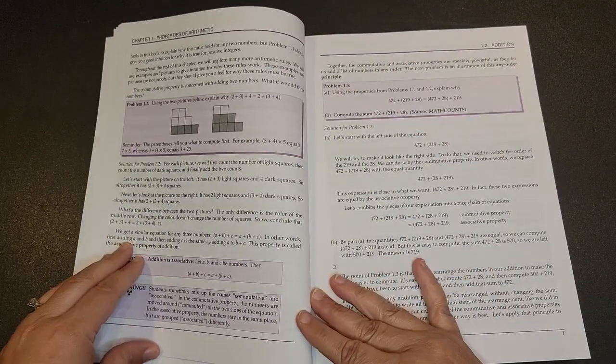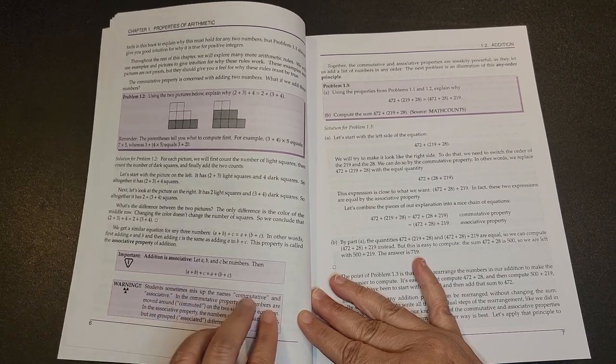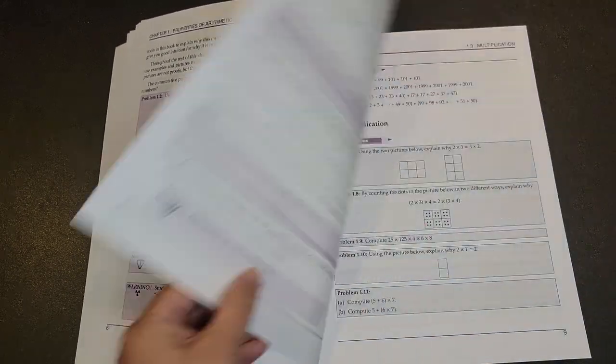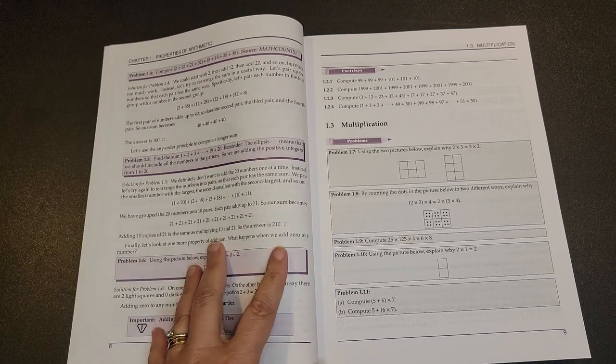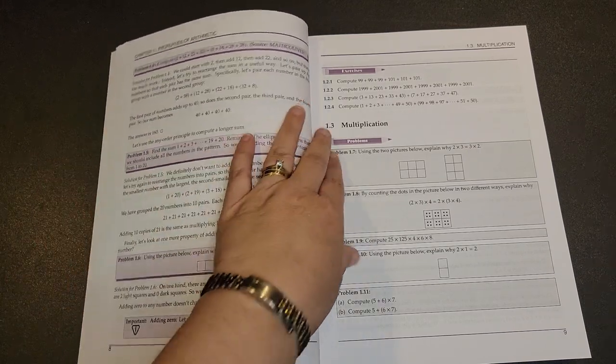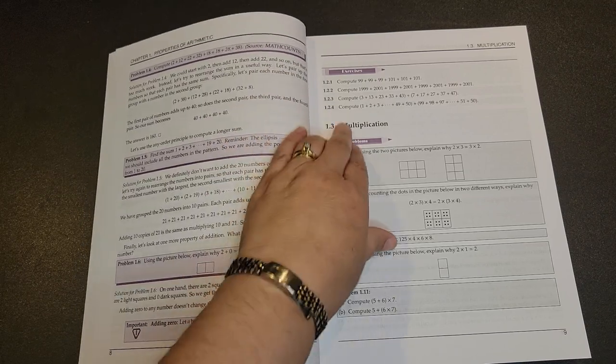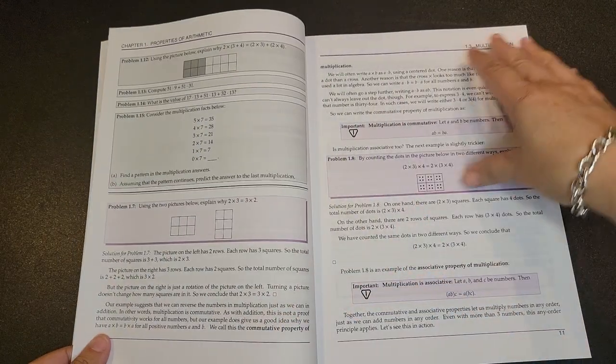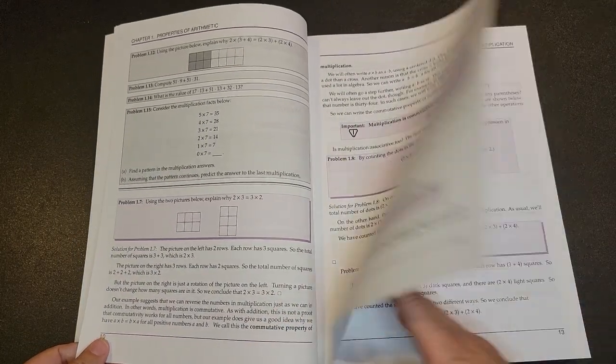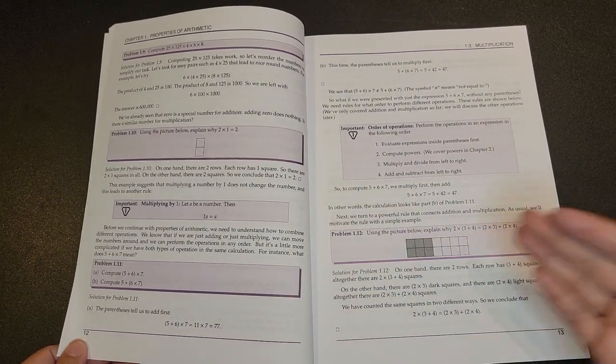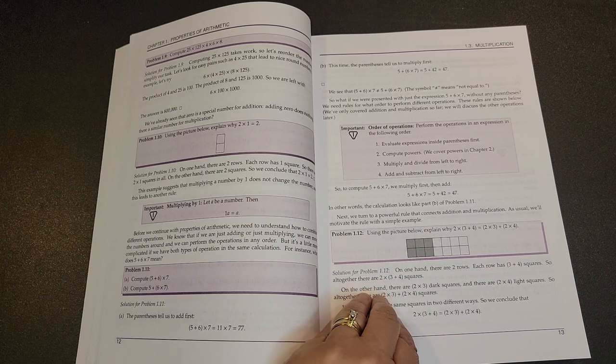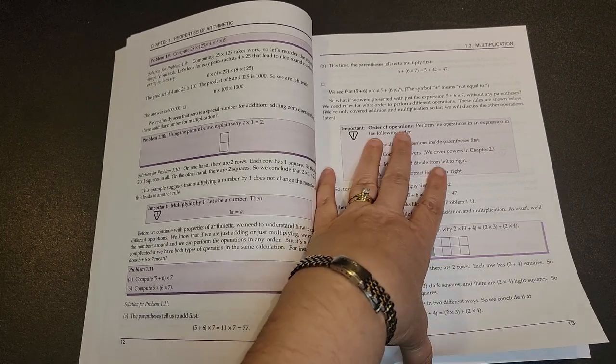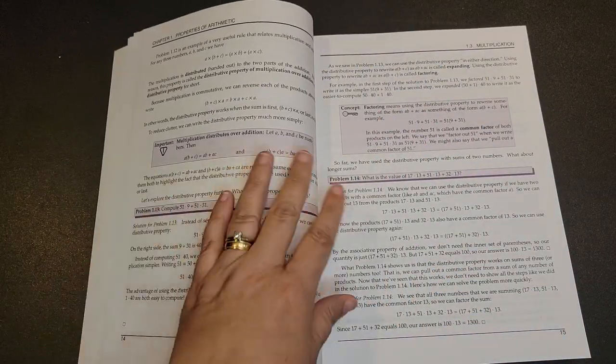They show warnings like 'students sometimes mix up the names commutative and associative,' so this describes the difference between the two. By the end of this section, you should be able to have no issue in working these types of problems. They do have four more exercises here for you. When you get into multiplication, again you have your problems first and then they go into the information of how to do this problem. This is very much a different way of thinking than what most children have been exposed to in learning how to do math. Here's your order of operations.